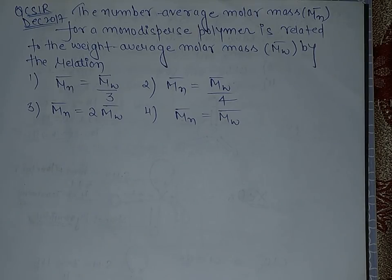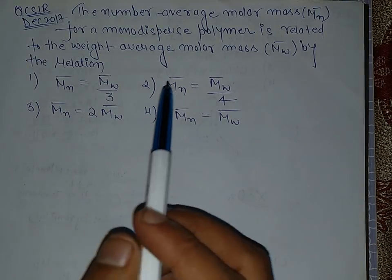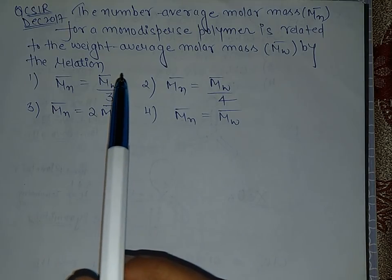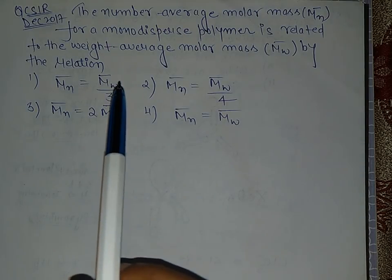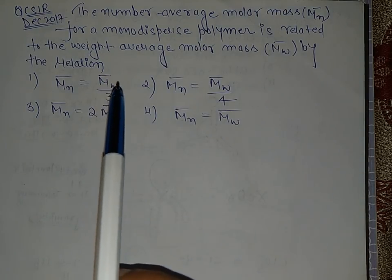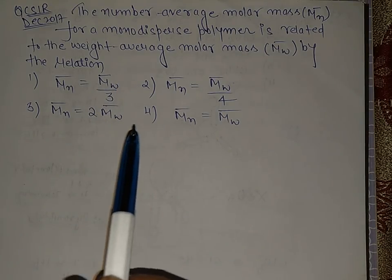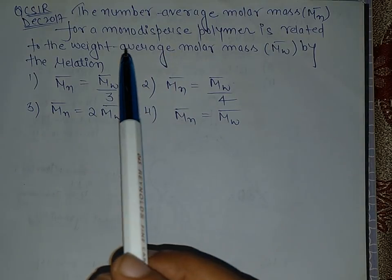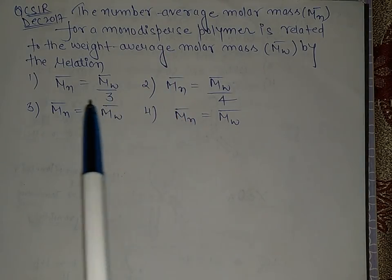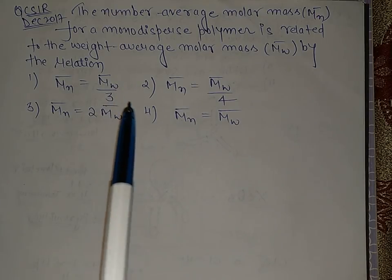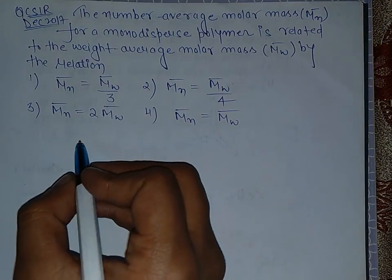Hello everyone, this question came today for two marks in CSIR December 2017 paper. Actually this type of question, and if I'm not wrong the exact question came in June 2017 paper. Now we are asked to derive the relation between the number average molar mass and weight average molar mass.